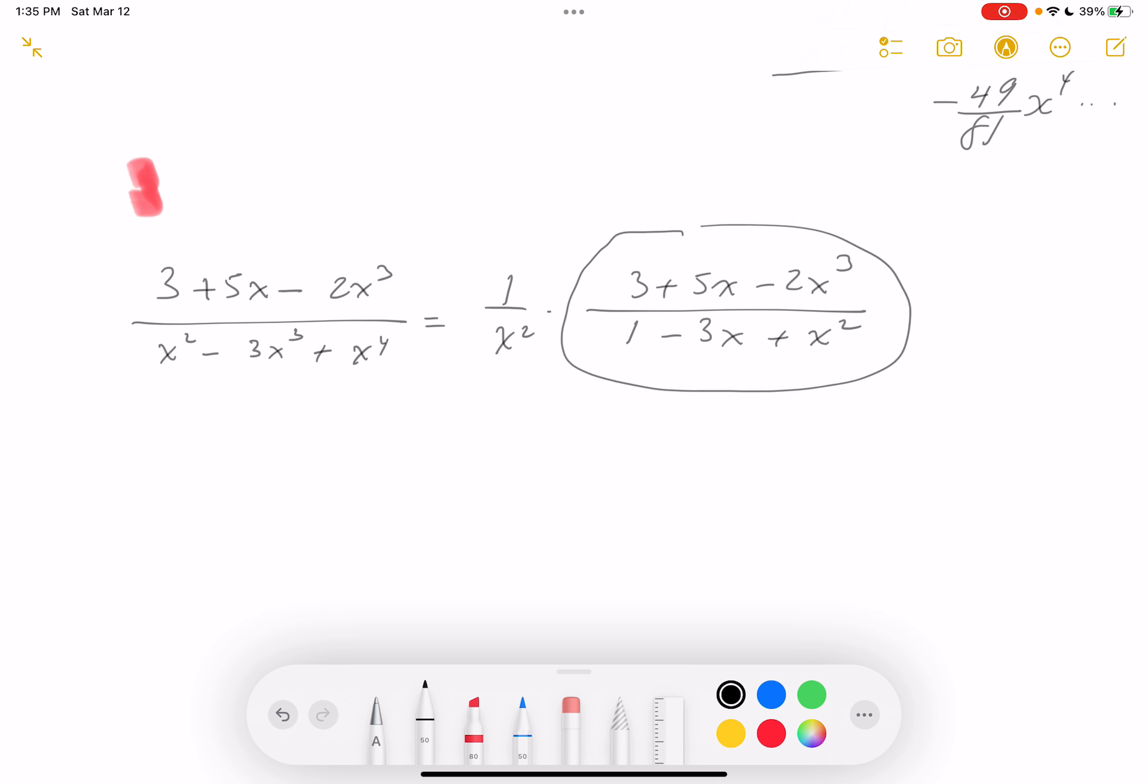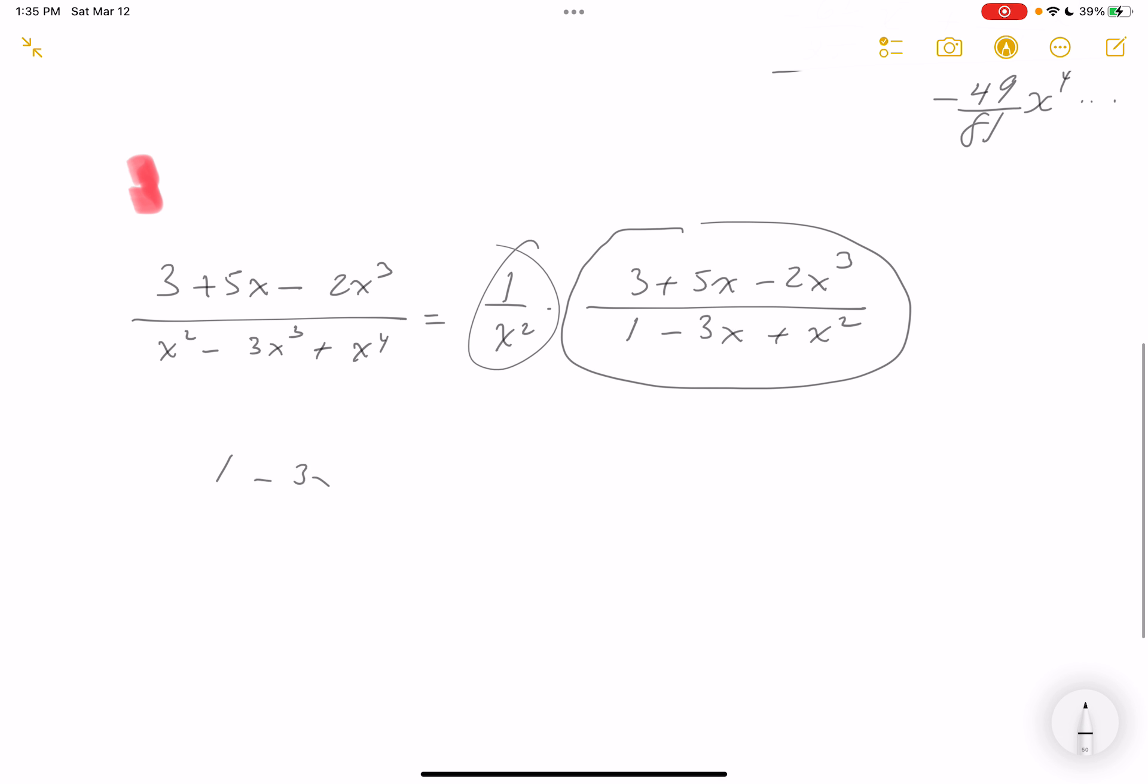I want to point out what we're doing. We're going to do long division on this and then multiply by 1 over x squared later. So it's 1 minus 3x plus x squared dividing into 3 plus 5x minus 2x cubed. I'm going to put the missing place down, though you don't have to do that if you don't want to.